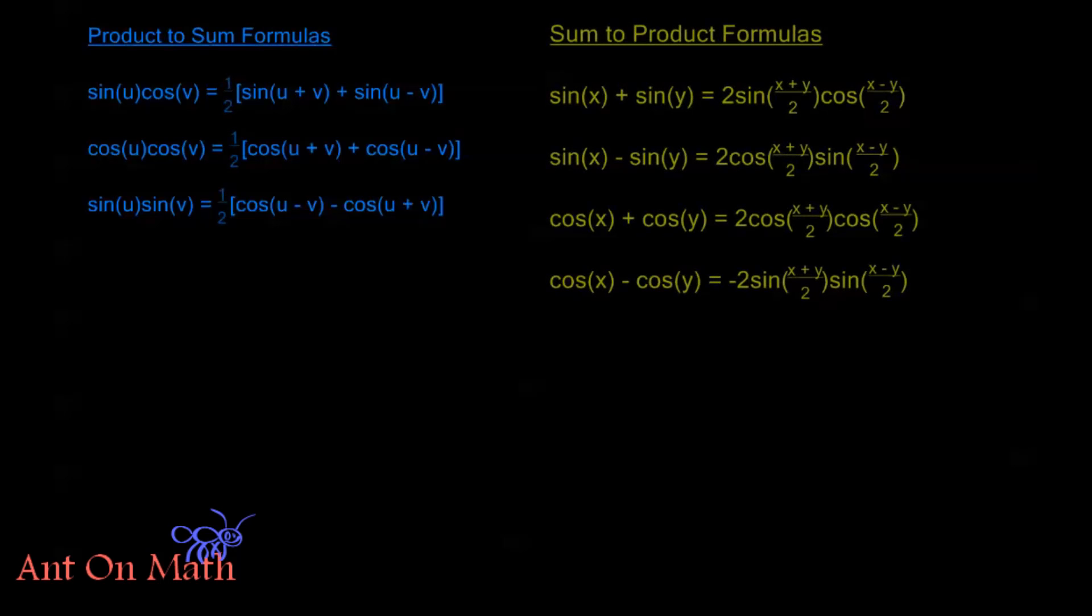Welcome back to Ant On Math, and in this video we're going to be going over the very last of our trigonometric identities. So let's go ahead and jump in. The first set of identities we have are the product-to-sum formulas, and the second set are what we call the sum-to-product formulas.